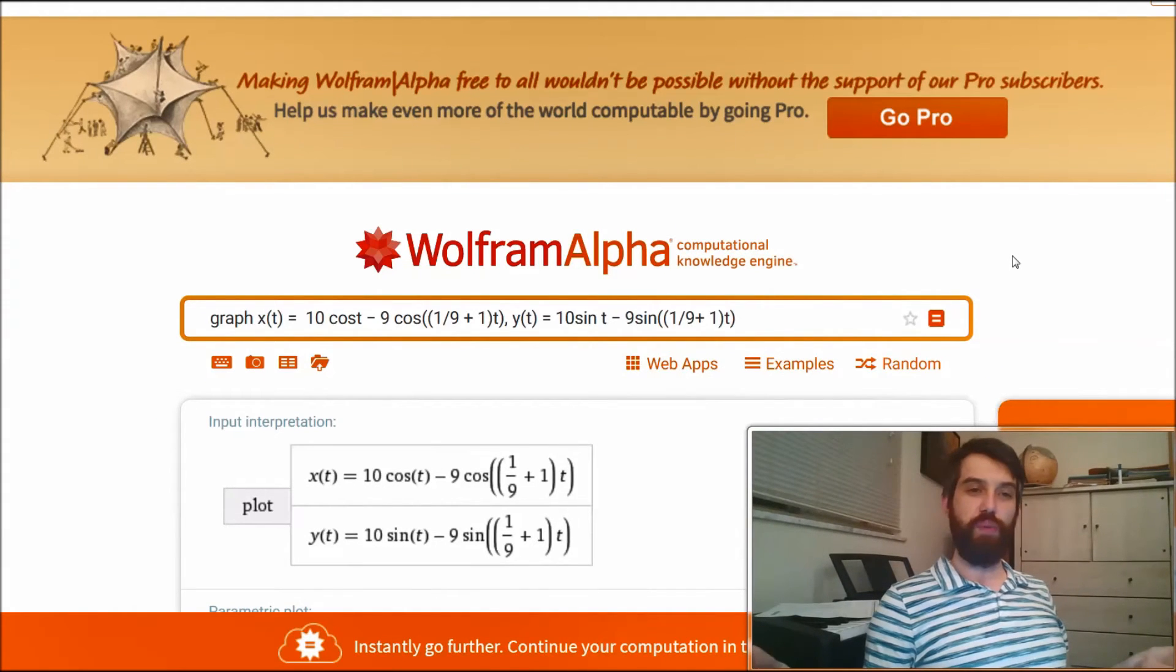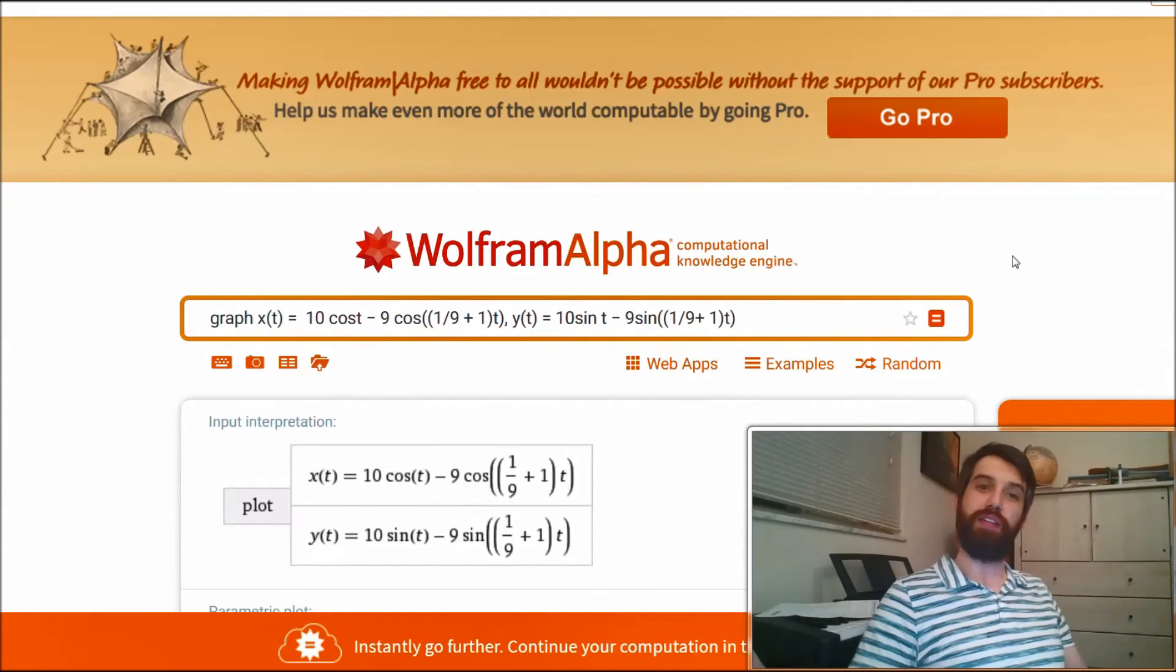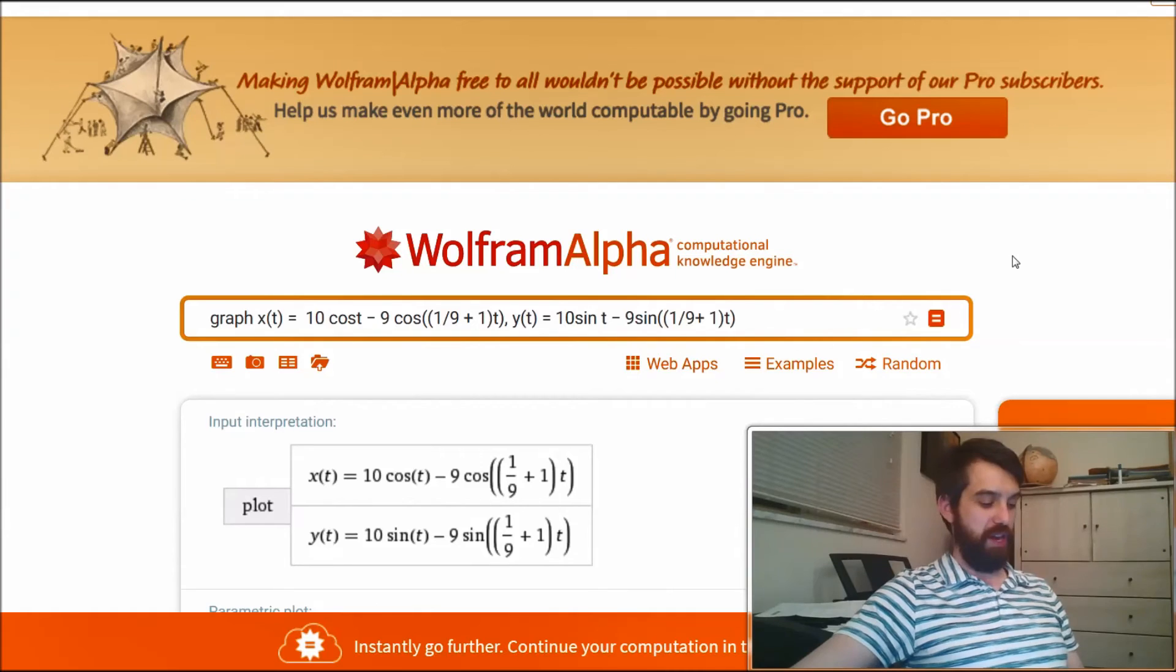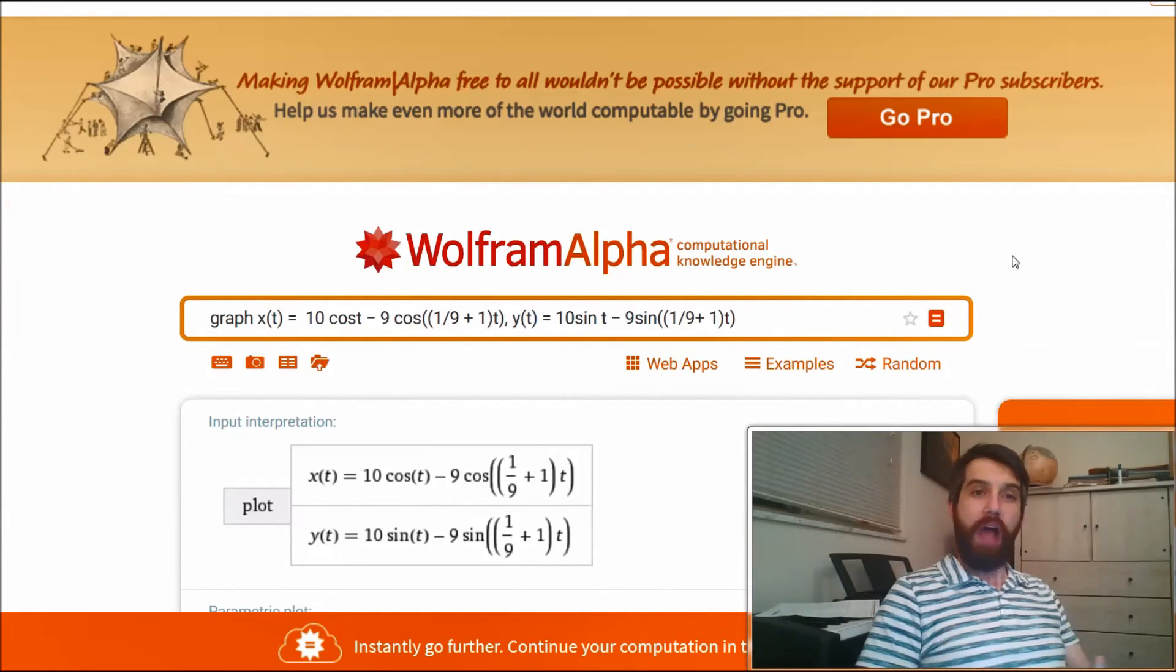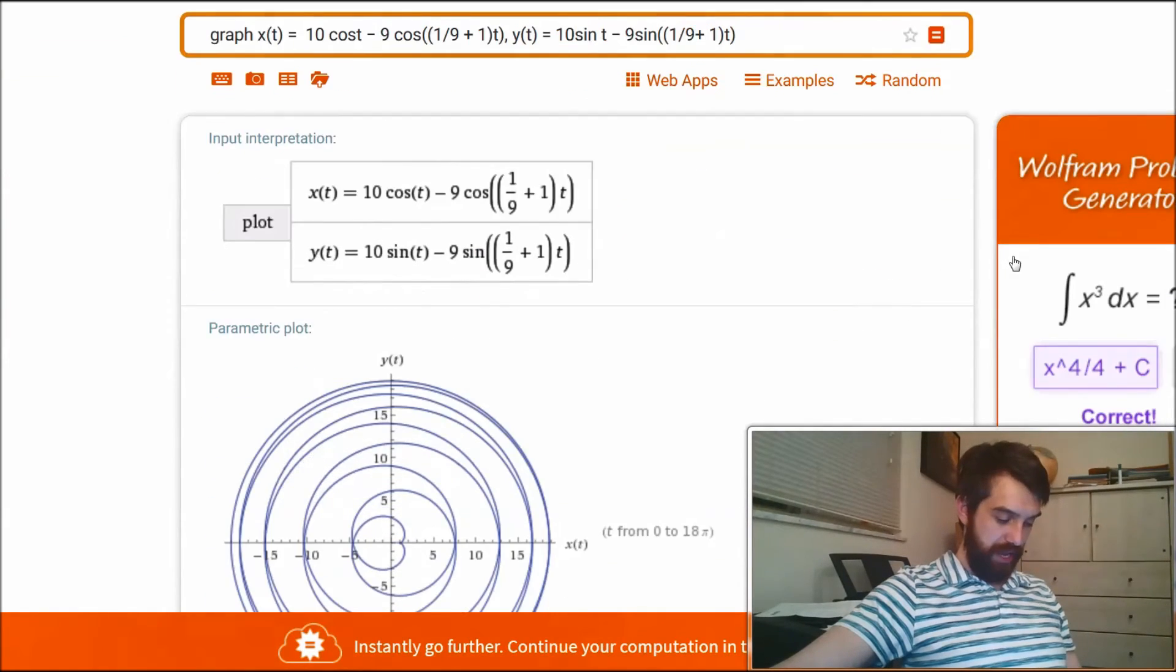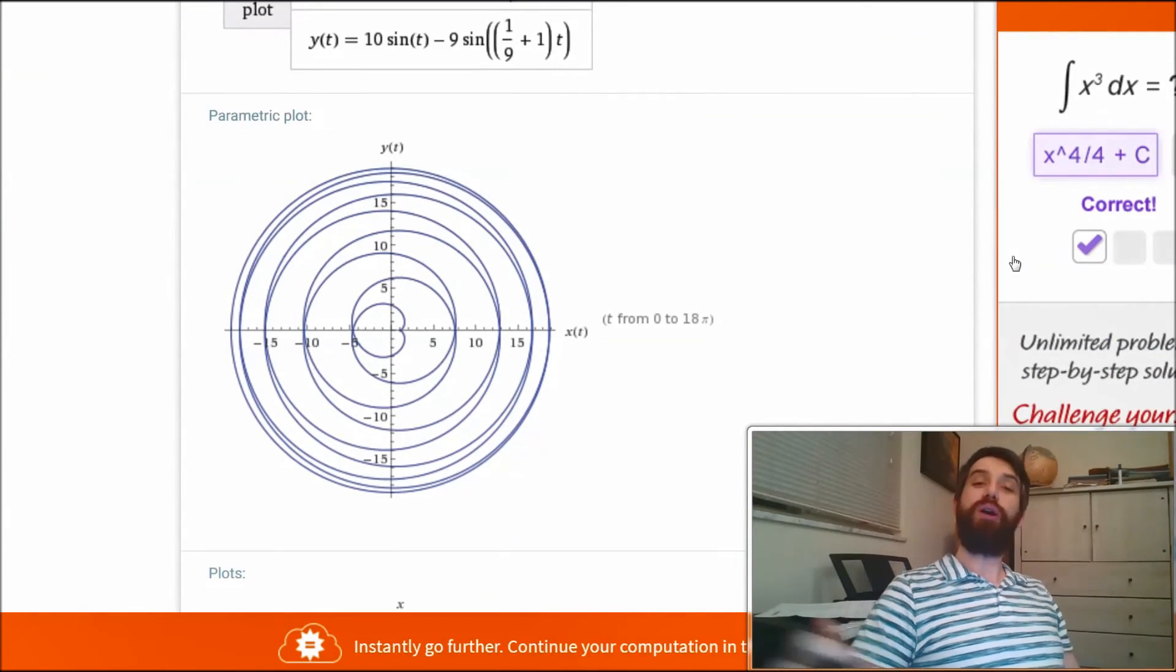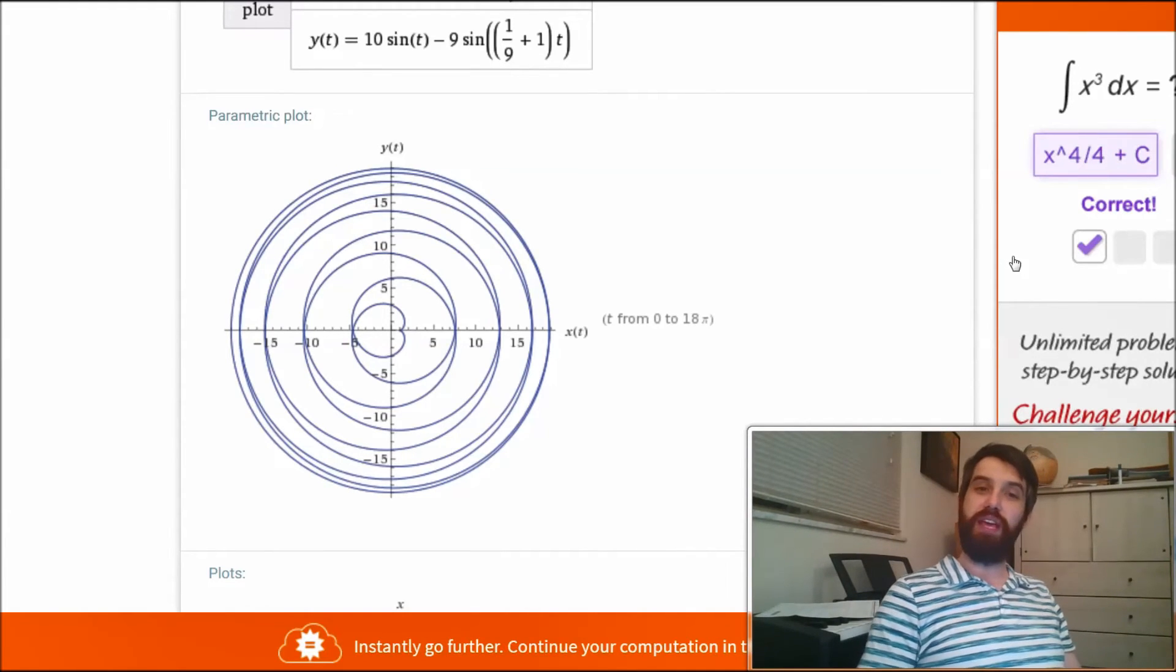Parametric curves can do all sorts of really kind of funny and often beautiful things. So I've gone over to Wolfram Alpha here, I've put in an x of t as some function, I've put in a y of t as some function, and let's see what the graph of that is going to look like. We get this bizarre-looking thing where we've got these circles and this little heart-shaped thing in the middle.